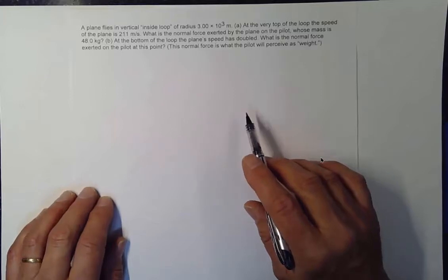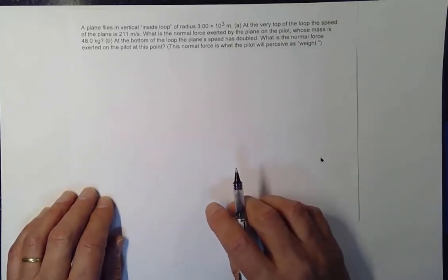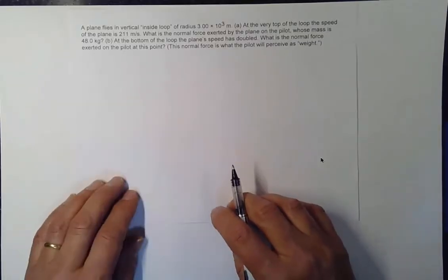We can figure this out. At the bottom of the loop, the plane's speed has doubled. What is the normal force exerted on the pilot at this point?